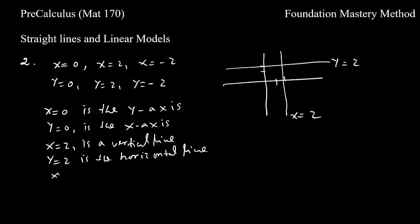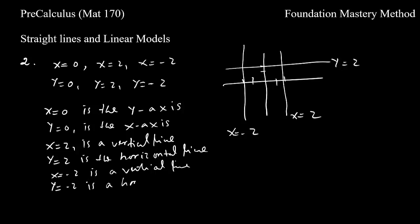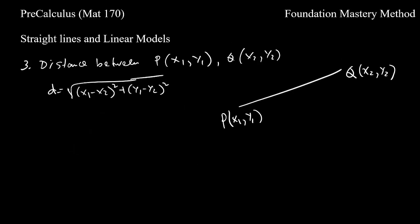So x=2 is the vertical line and y=2 is the horizontal line. Similarly, x=-2 is also a vertical line, going 2 units to the left. And y=-2 is a horizontal line 2 units below the x-axis. Next, we look at the formula to find the distance between two points.